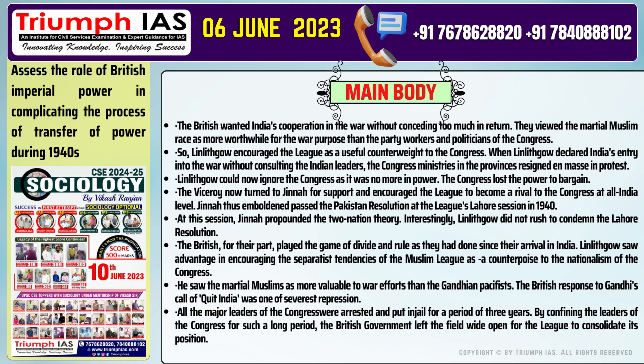Main body, Point 1: The British wanted India's cooperation in the war without conceding too much in return. They viewed the martial Muslim race as more worthwhile for war purposes than the party workers and politicians of the Congress. Point 2: Linlithgow encouraged the League as a useful counterweight to the Congress. When Linlithgow declared India's entry into the war without consulting the Indian leaders, the Congress ministries in the provinces resigned en masse in protest. Point 3: Linlithgow could now ignore the Congress as it was no more in power. The Congress lost the power to bargain.